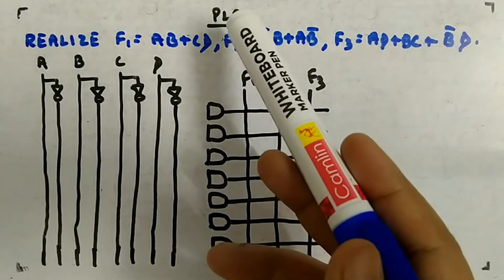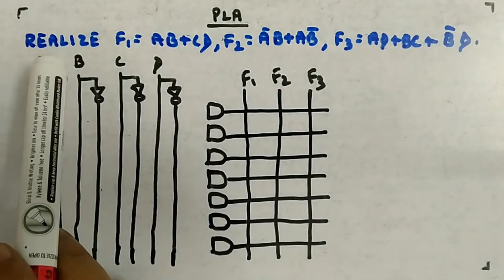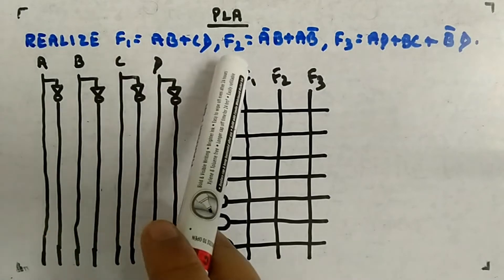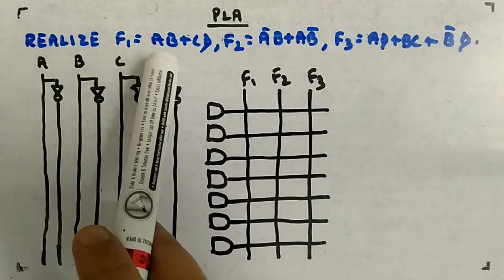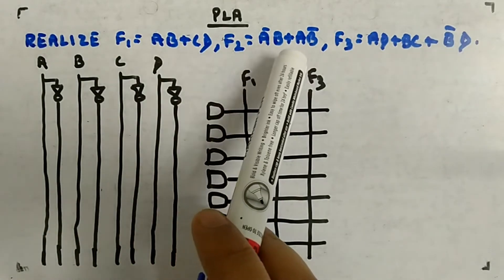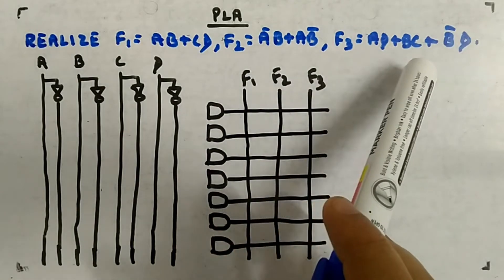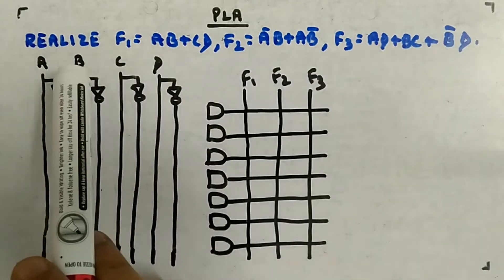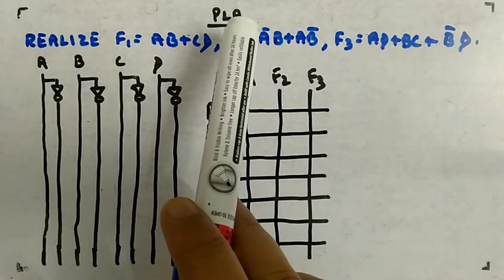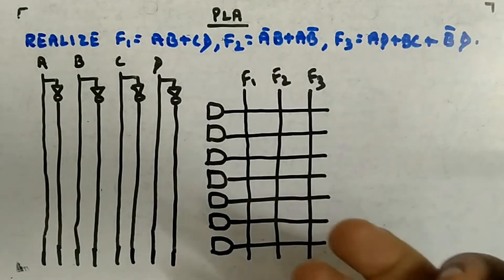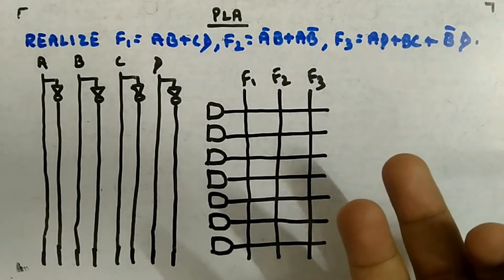Okay, so let's look at another example of PLA. It is given to you: realize functions f1, f2, and f3. These are AB plus CD, A bar B plus AB bar, and AD plus BC plus B bar D - three functions you have to realize. You are not given any PLA, so you have the choice to use whatever size of PLA you want.